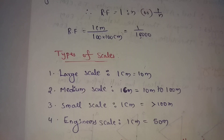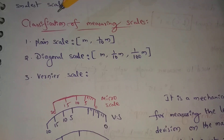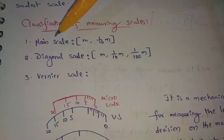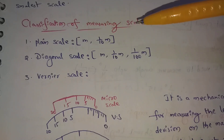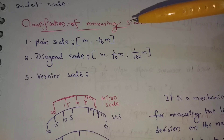Next: classification of measuring scales. The main scale has three types. First is the plain scale. On a plain scale, it is possible to measure two successive dimensions only.